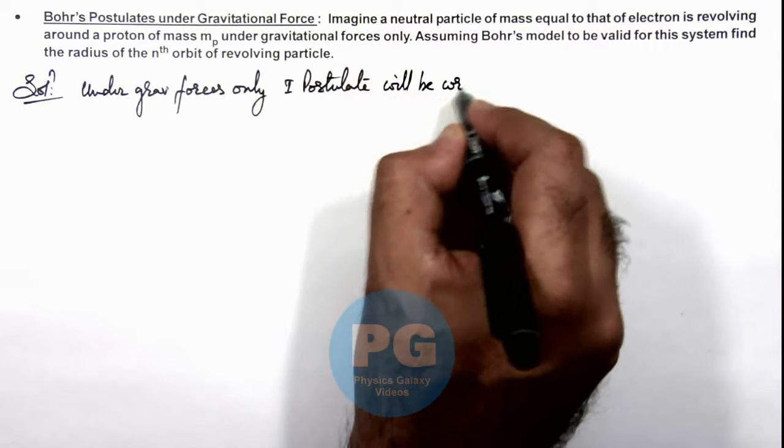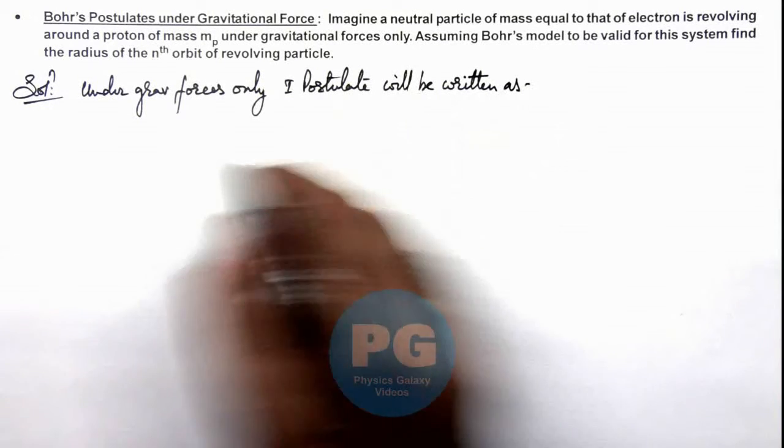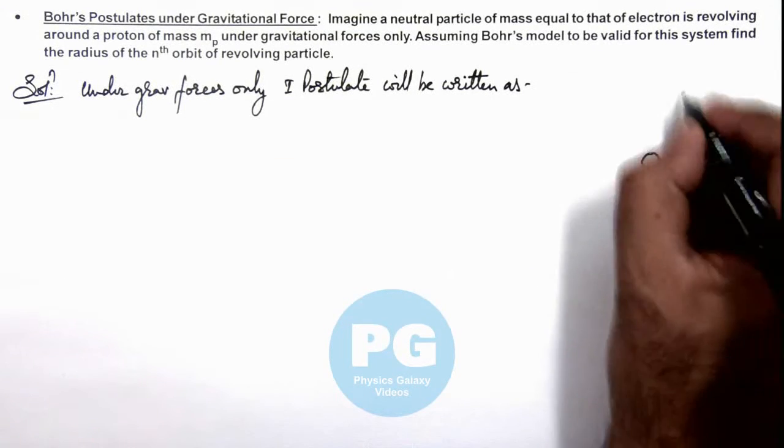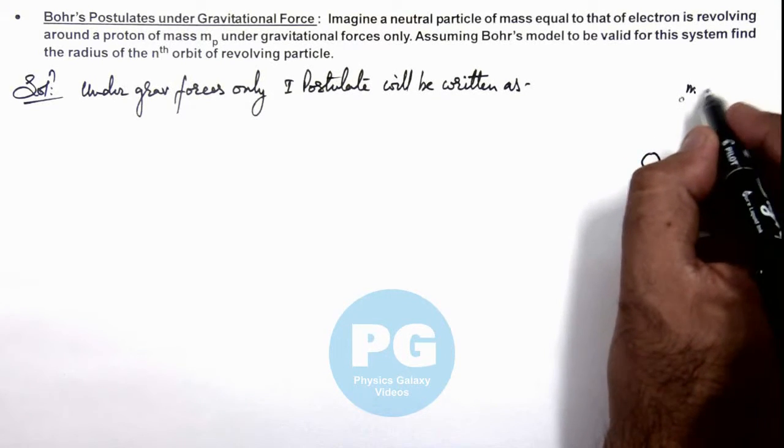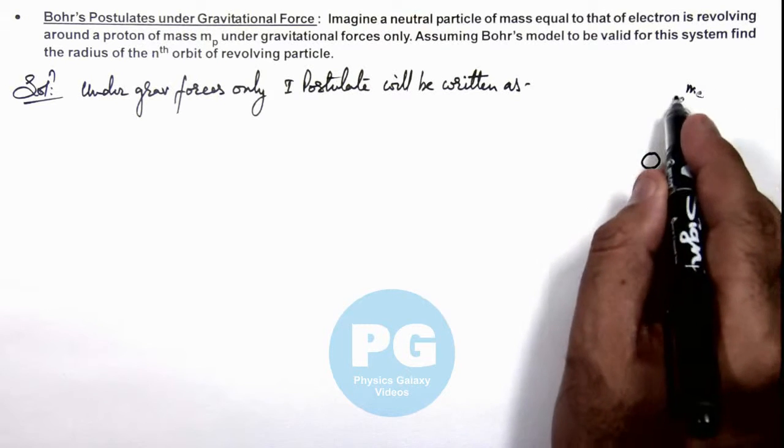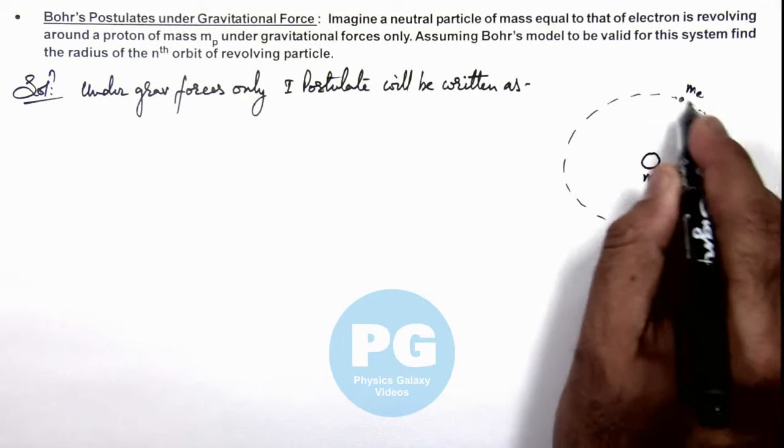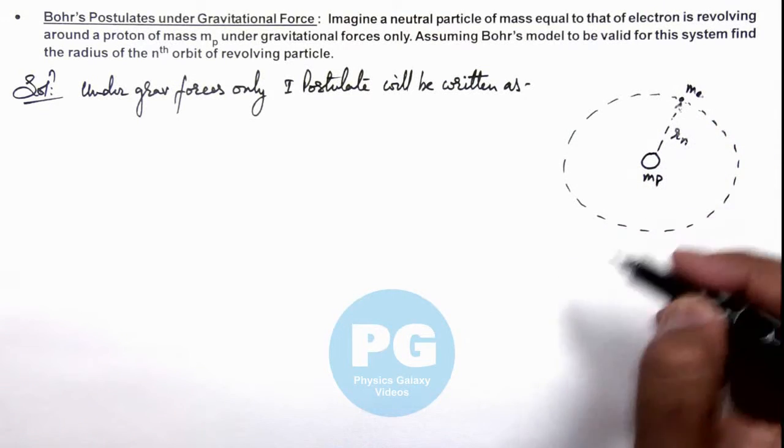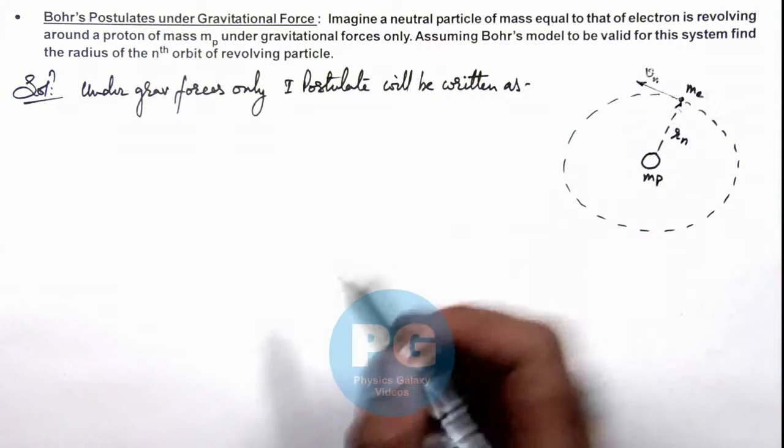Will be written as follows. Here we can write the first postulate. We are given that the central particle is mp and the electron mass we consider as m or me, which is revolving around this proton only under gravitational forces in an orbit of radius r, which can be considered as rn for the nth orbit, and its speed we can consider as vn in the nth orbit.